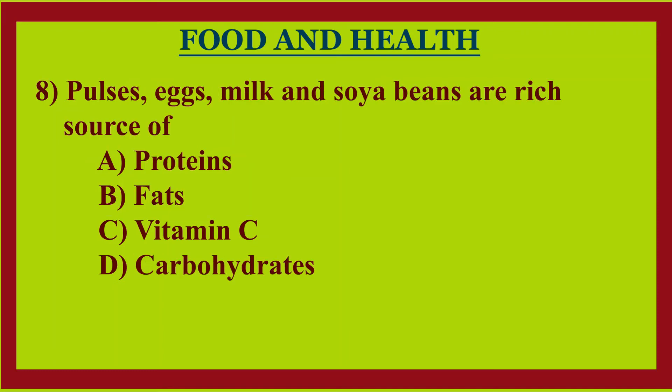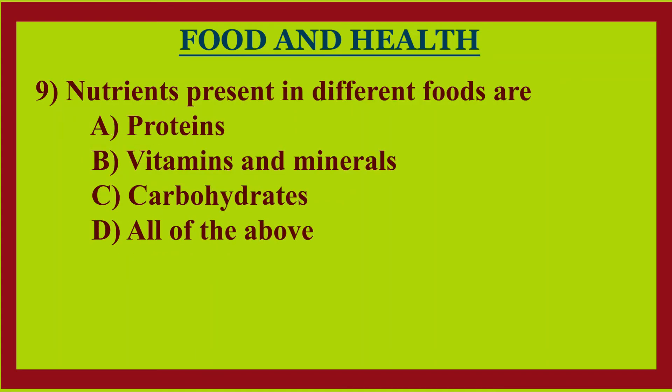Eighth question: pulses, eggs, milk, and soybeans are a rich source of — option A: protein, option B: fats, option C: vitamin C, option D: carbohydrates. Answer: option A, protein.